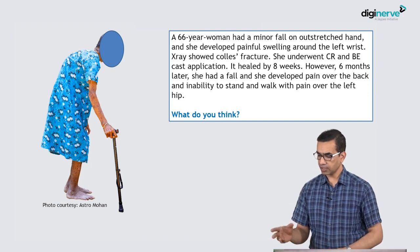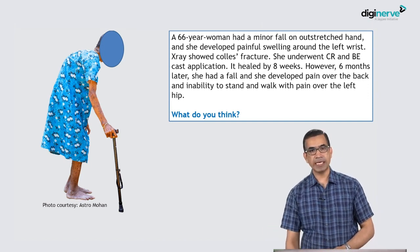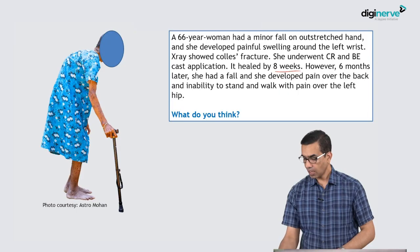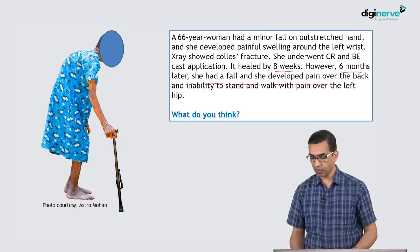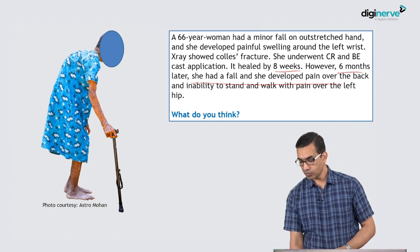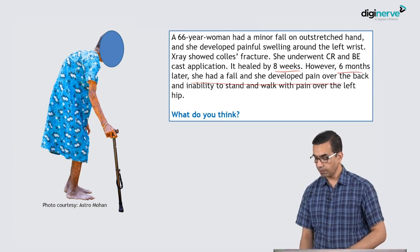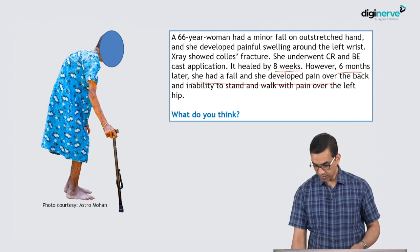She ended up in closed reduction and below-elbow cast application which healed after 8 weeks. However, 6 months later she had a fall and developed pain over the back and inability to stand and walk, with pain over the left hip.